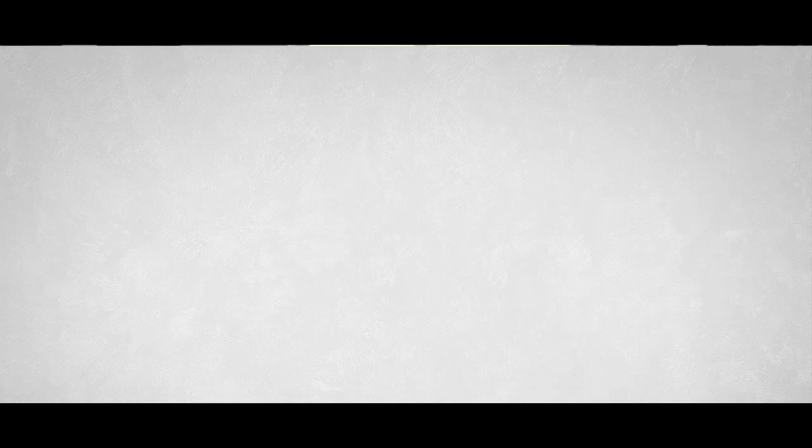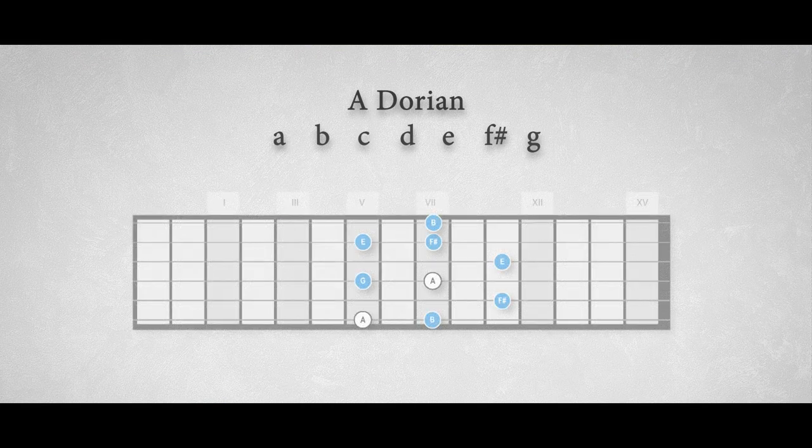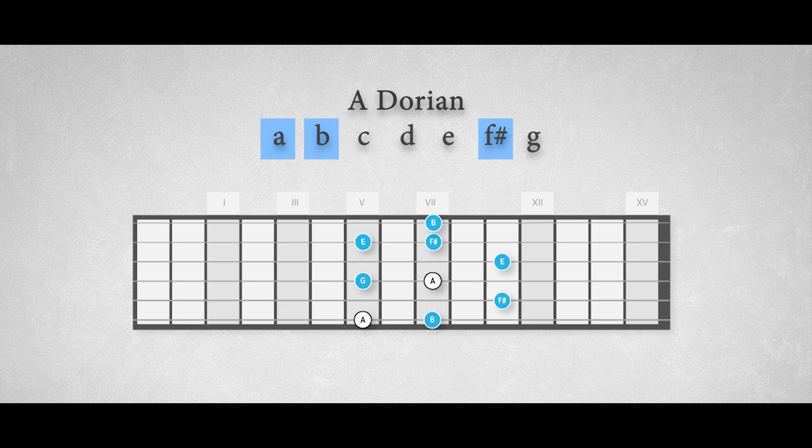Let's do this for the Dorian mode too. We could apply this 2-1-2-1 shape in this way. We're playing the notes A, B, F sharp, the Dorian trigger note, G, A, E and again the note E, the note F sharp and the note B.